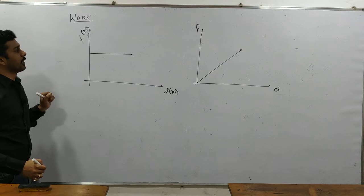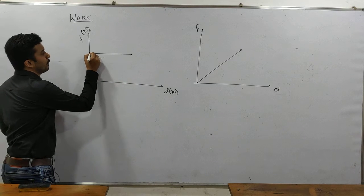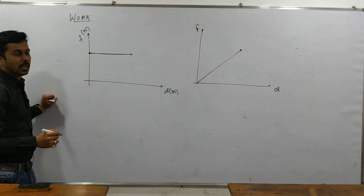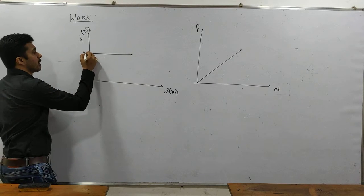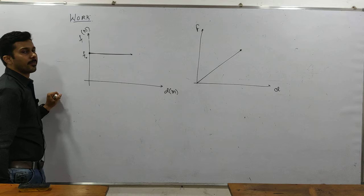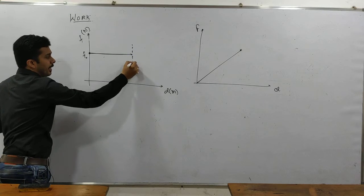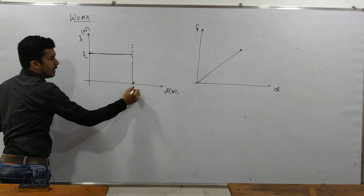From the graph what can you conclude? You see force does not change. So the value of force is fixed, F not. And let's say it moves the distance of D1.